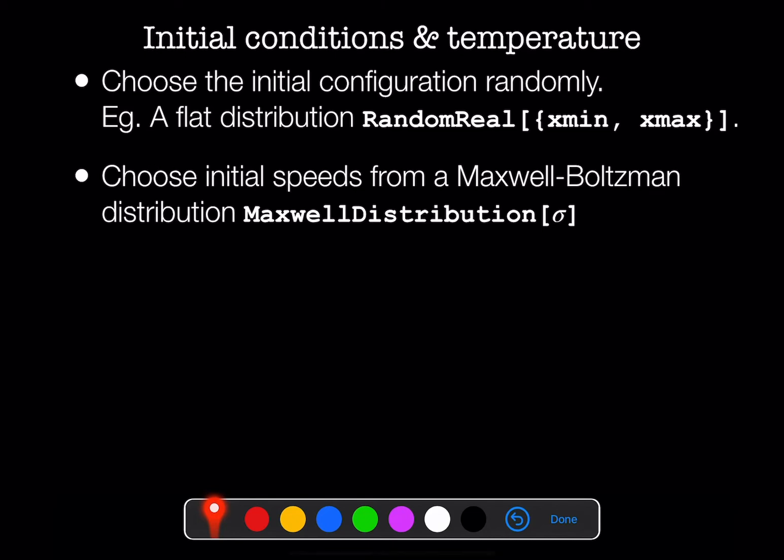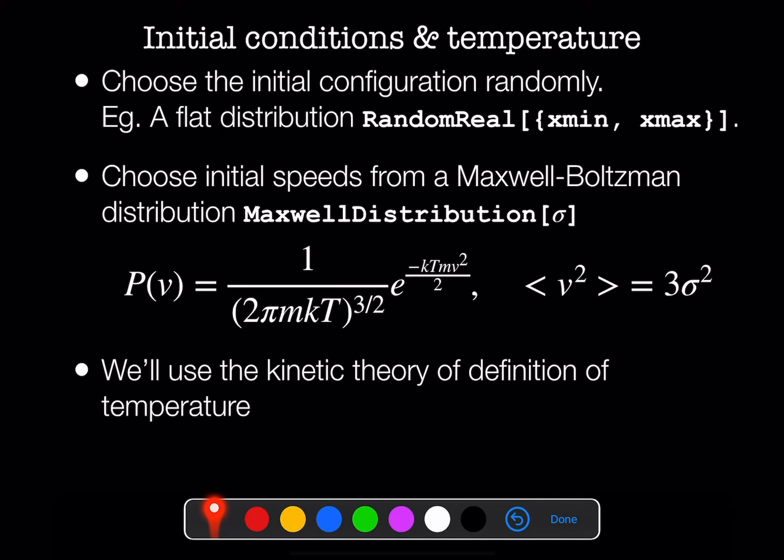Next we want to choose our speeds. We're going to draw our speeds from a Maxwell Boltzmann distribution. In Mathematica that is Maxwell distribution and the width here is going to be sigma. This is what the distribution looks like. It's basically relating two energy scales here. One is kT and one is one half mv squared, so the kinetic energy. We're basically relating the kinetic energy to temperature. This is called the kinetic theory definition of temperature, saying that the average temperature in the system is really going to just be equal to the kinetic energy.